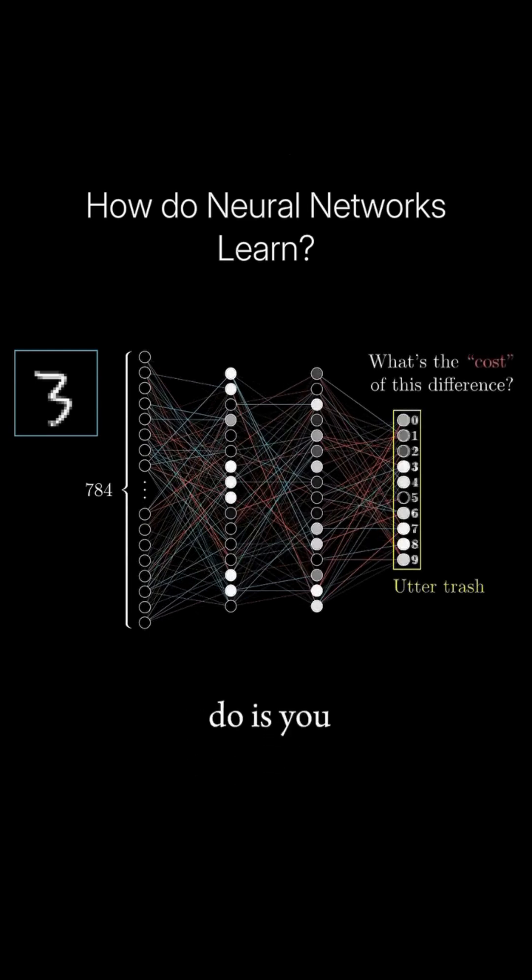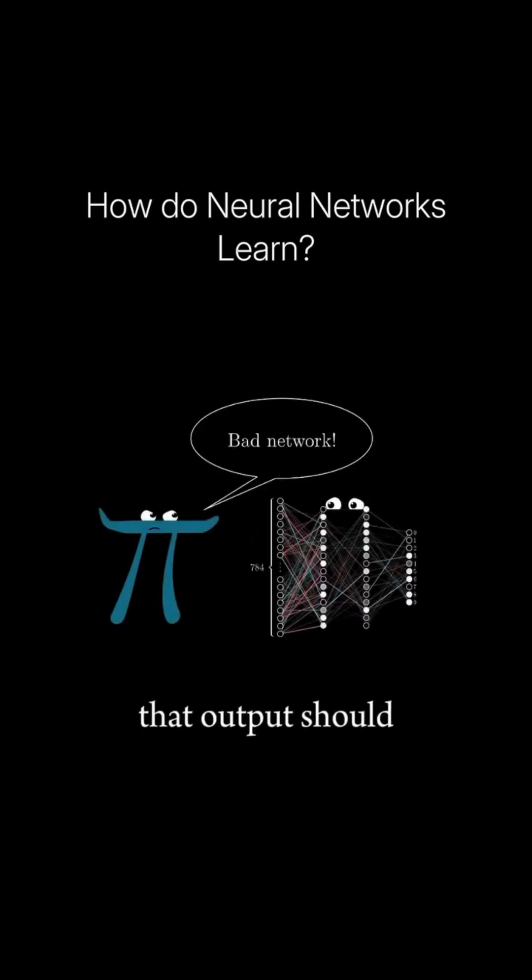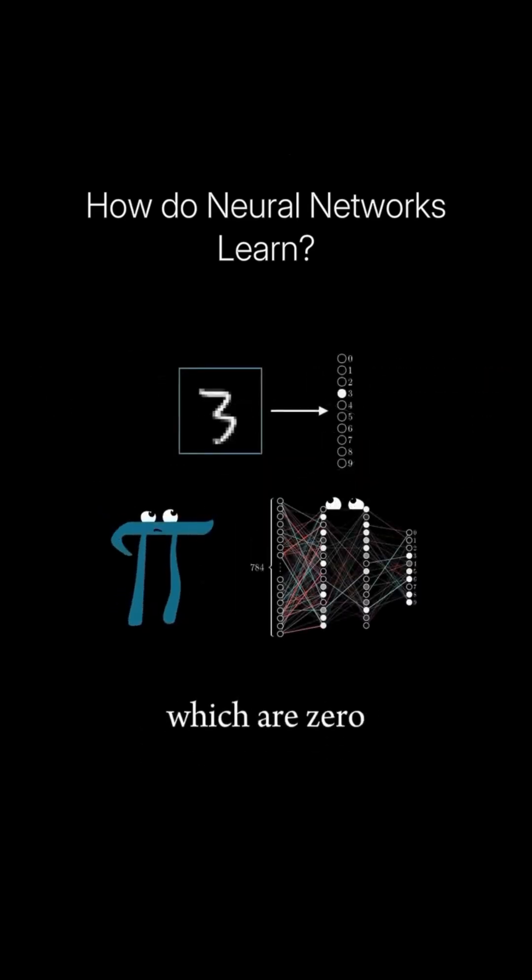So what you do is you define a cost function, a way of telling the computer that output should have activations which are zero for most neurons, but one for this neuron.